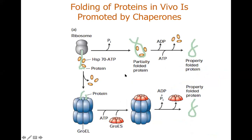Polypeptide chains separated from ribosomes can fold based on the amino acid sequence under optimal pH and buffer conditions. However, the chances of misfolding also exist. To avoid misfolding, the cell contains folding machinery.